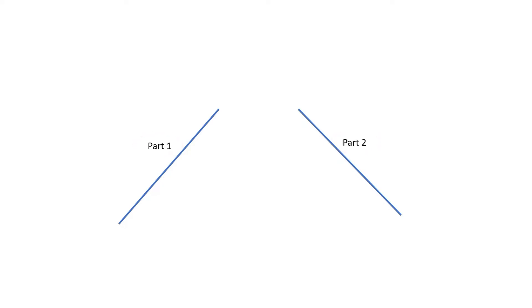However, there are structures which are made by assembling different rigid bodies — that is, those structures contain multiple rigid bodies instead of a single rigid body, which are connected in some way. For example, in this case we have two rigid parts, part one and part two, which are connected by what we call a hinge connection. We will explain what a hinge connection is, and this structure is intended to carry some special type of loads.